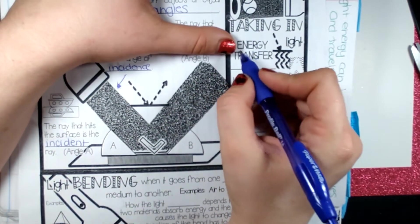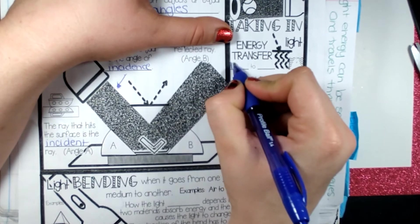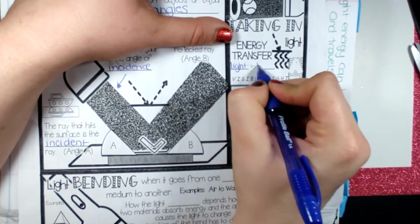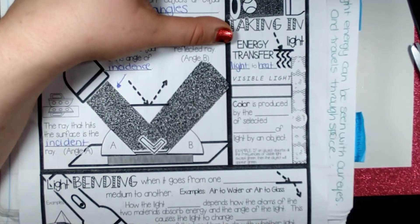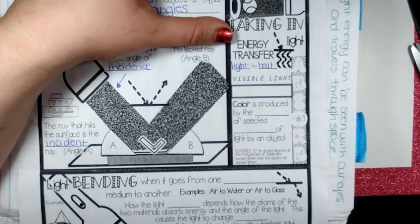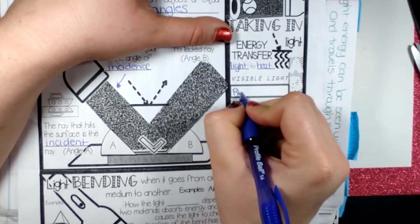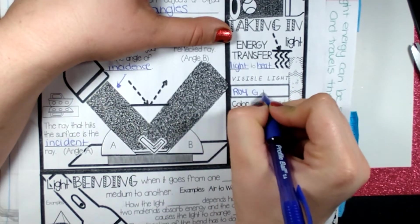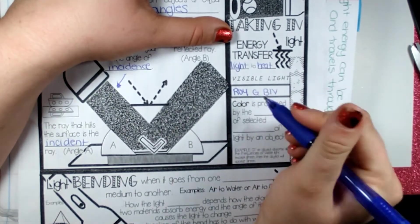So taking in energy. We're going to talk a little bit about transfer. So we can transfer light to heat. Like I said, light and heat go hand in hand. Okay, now visible light can be absorbed.